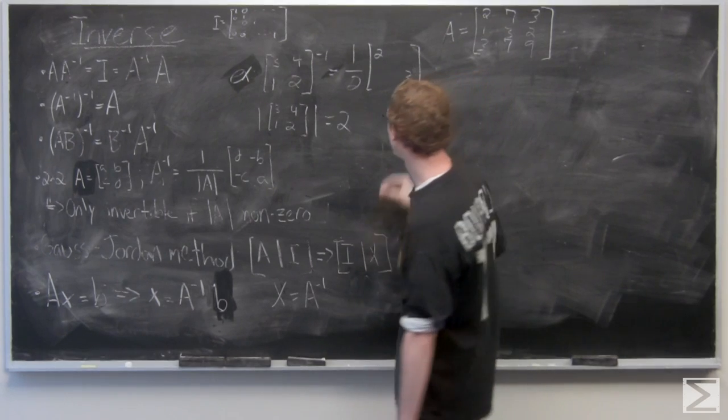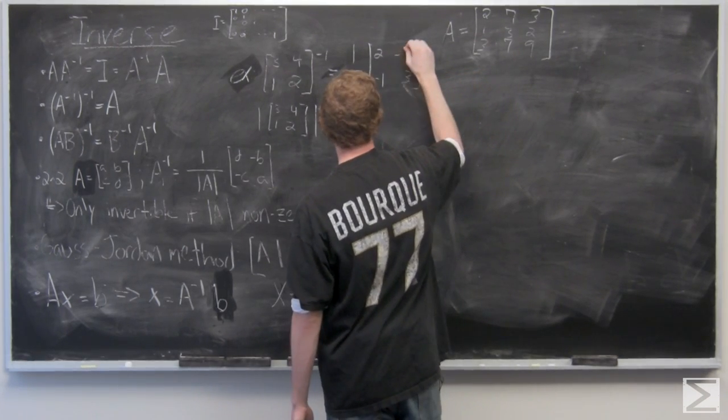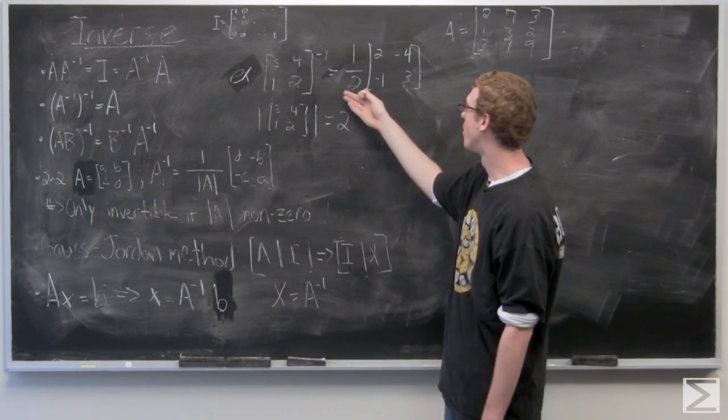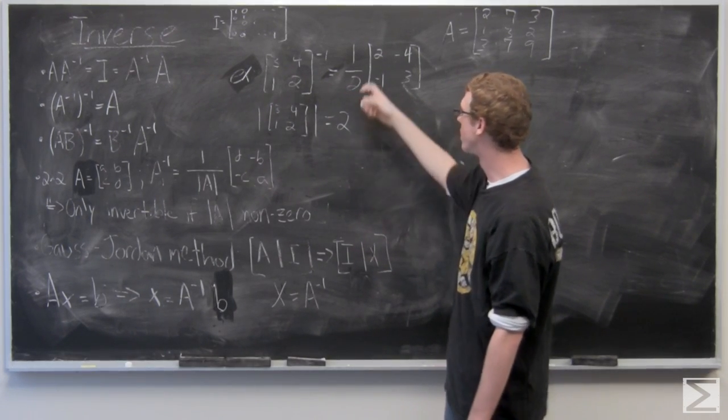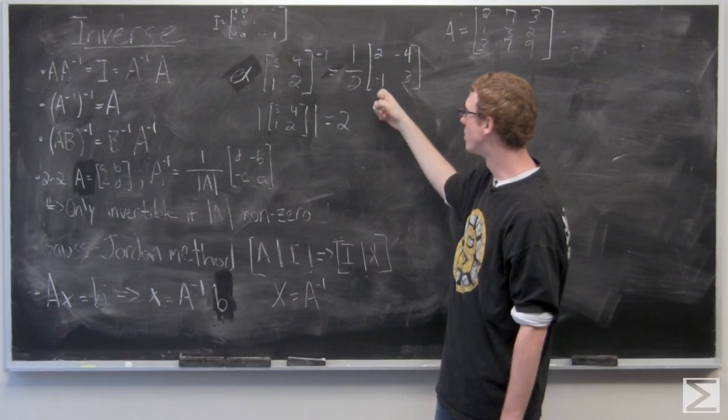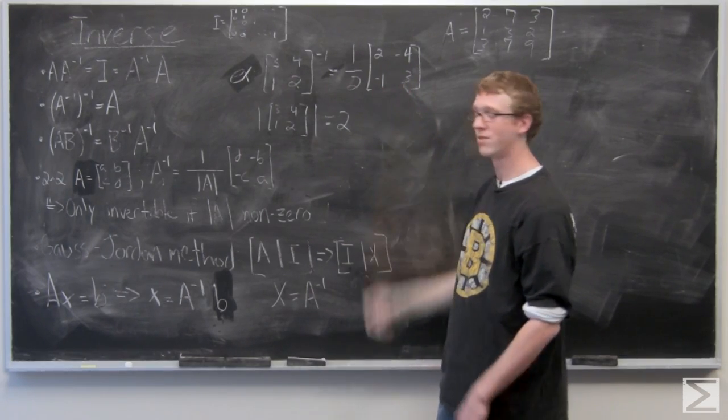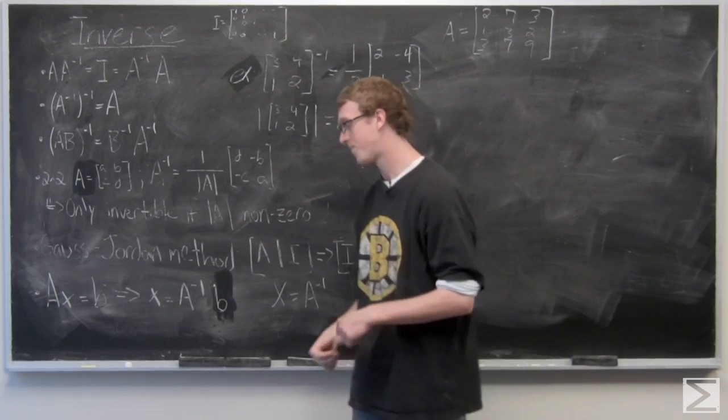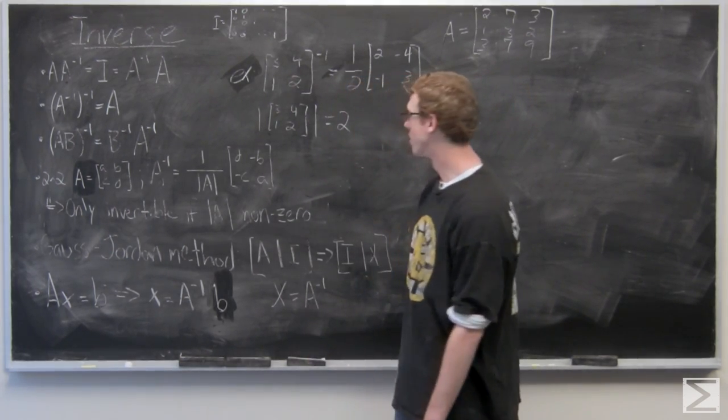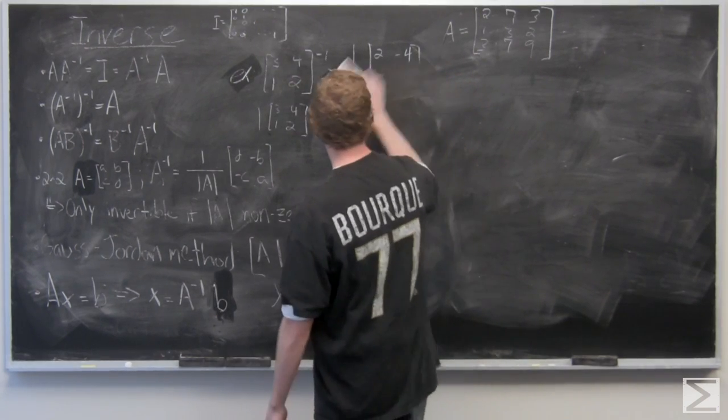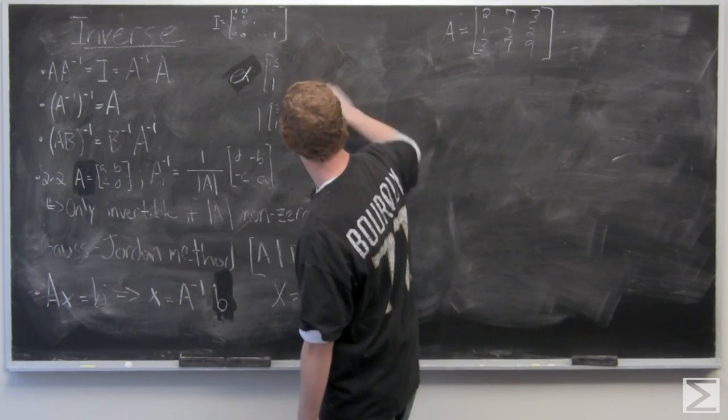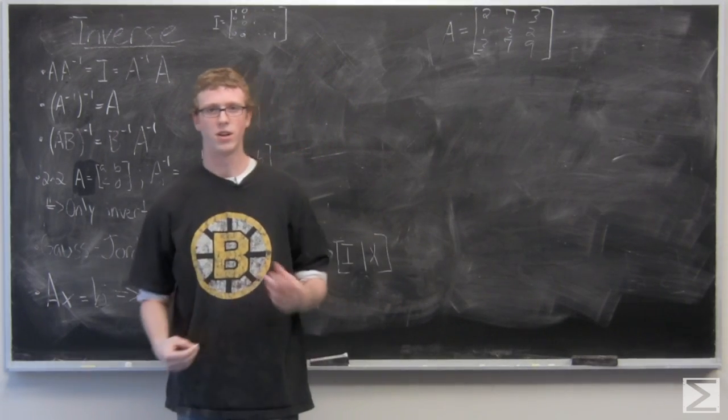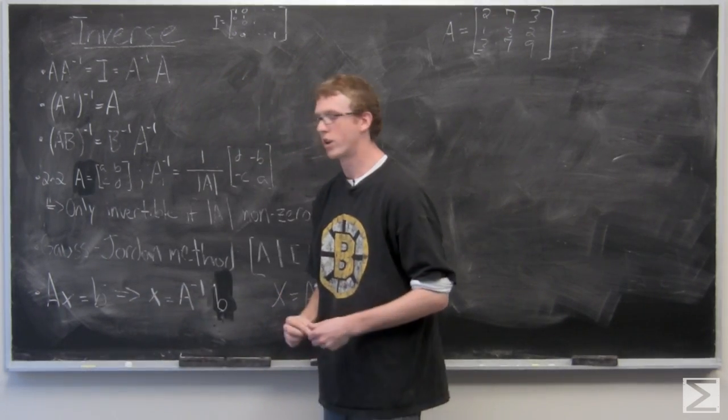Now you can either evaluate that by multiplying through by the scalar and you get 1, negative 2, negative 1/2, and 3/2. We're just going to leave that scalar out so we don't have to deal with the fractions in the inverse matrix. So that's the inverse of a 2 by 2 matrix—it's very easy to see and very easy to get to.